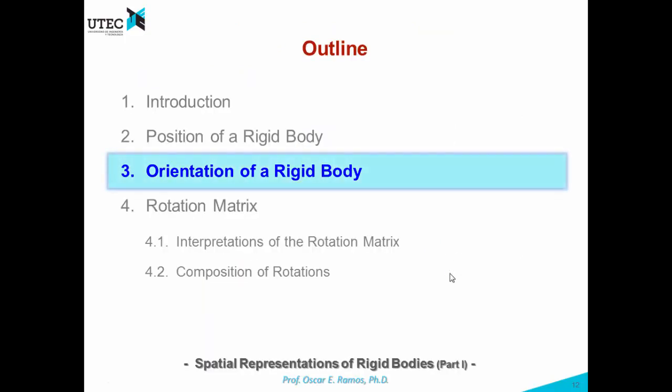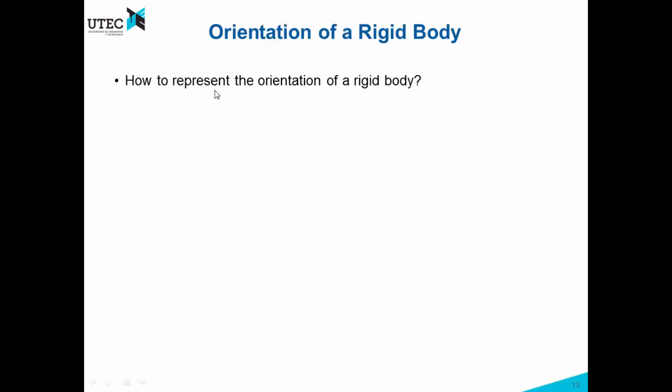Then let's see the orientation of a rigid body. How do we represent the orientation of a rigid body? Again, we have this reference frame, and we have the body, and in this case it has some orientation. What we do is we assign a reference frame to this body, and then we represent the relation between this frame and this frame. And the relation between frames is going to define the orientation of the rigid body. So that's why we will be interested in defining the relations between frames.